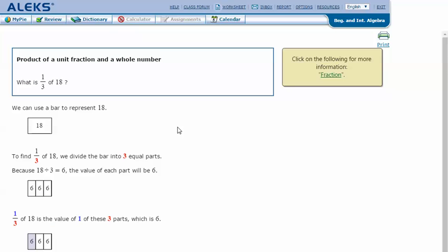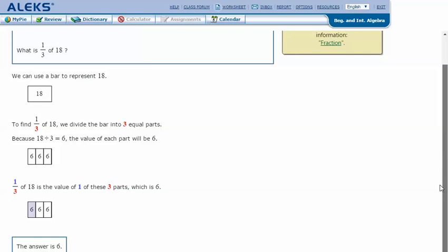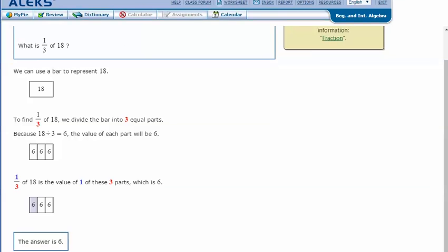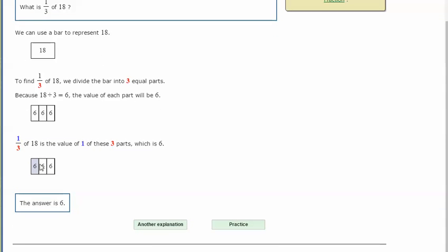We can use a bar to represent 18. To find 1/3 of 18, we divide the bar into 3 equal parts. 18 divided by 3 is 6, so the value of each part will be 6. One of those, or 1/3 of 18, is the value of one of these three parts, which is 6.